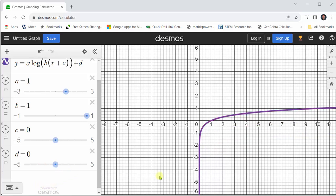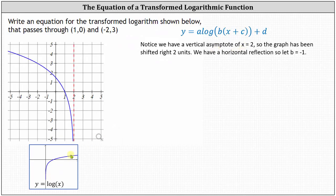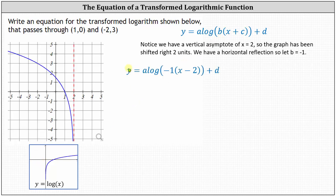Going back to our graph, notice we have a vertical asymptote of x equals two, which indicates the graph has been shifted right two units. This indicates that c is going to be negative two. Comparing the graph to the basic common log graph below, we have a horizontal reflection, which indicates b is going to be negative one. This gives us y equals a times common log of the product of negative one and x minus two, plus d.